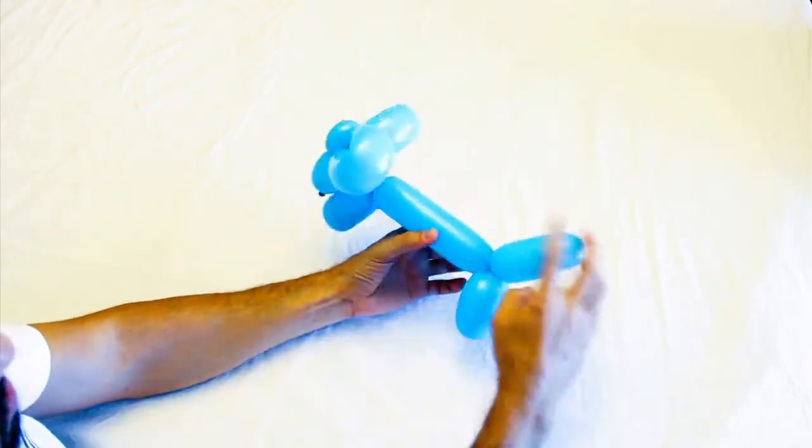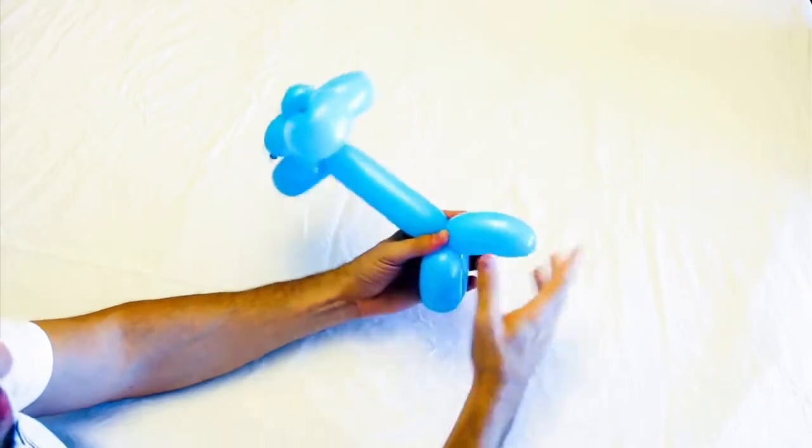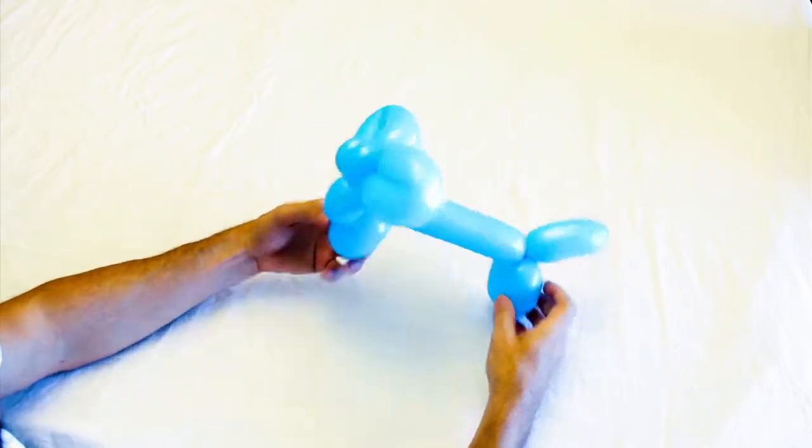And you should have a tail with a long body. Give your tail a little bend, this is your wiener dog.